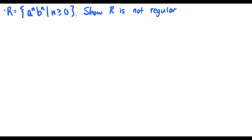Let's do a nice example: R equals a^n b^n. This means we have some number of a's followed by the same number of b's — for instance ab, aabb, aaabbb, and so on. If you want, you can try to show this is a regular language by constructing a finite state machine. Good luck — you can't. But it might be nice to try and show yourself that it's impossible.